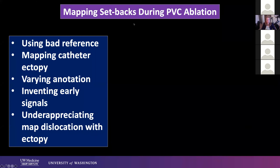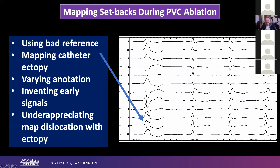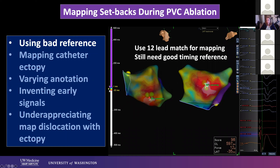How can you set yourself back in mapping during PVC ablation? If you choose a bad reference — or your mapper chooses a bad reference — it's going to be a long day. An example would be choosing V5 where you have a double notch. Is the system updating at the same point in the PVC? Technology is really helping us move past these limitations, but there's still some manual decision making behind the scenes. In the ESI system, we use a 12-lead match, so you have to match all 12 leads in terms of morphology, but there's still a timing reference. Learn your systems and what they're actually doing.